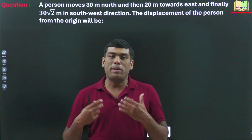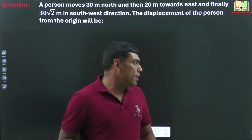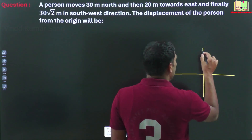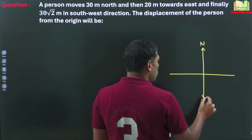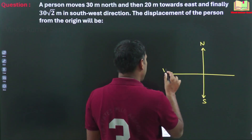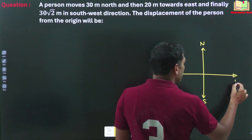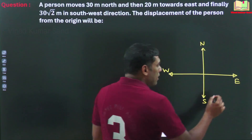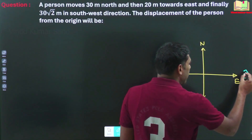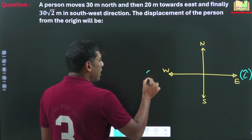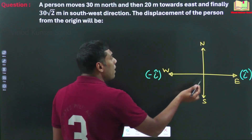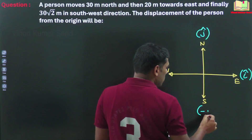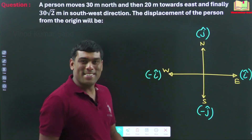To calculate the displacement, we make a picture like this. Here is the north direction, here is the south direction, here is the west direction, and here is the east direction. Along the east direction, we consider the unit vector to be i cap. Along the west direction, it is minus i cap. Along the north direction, it is positive j cap. And along the south direction, it is minus j cap.